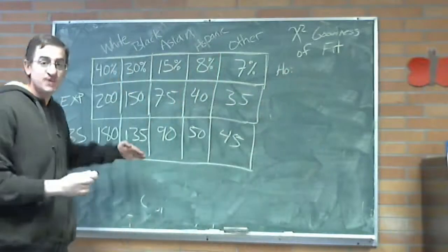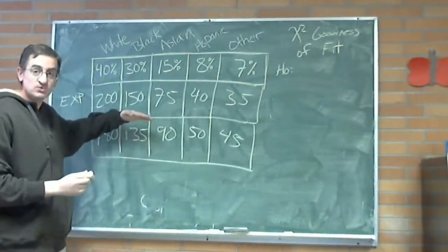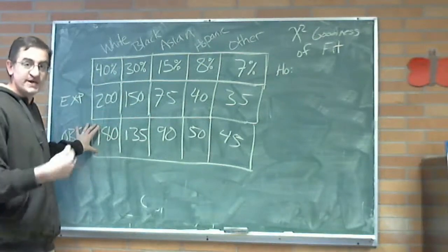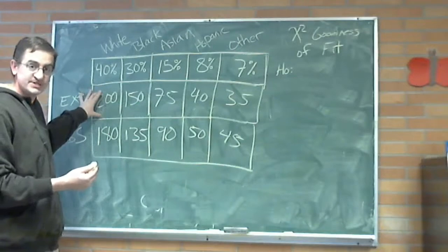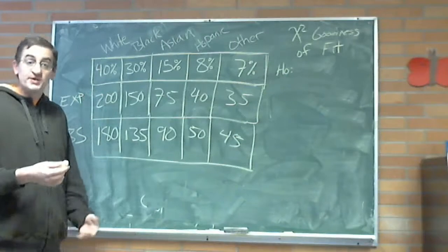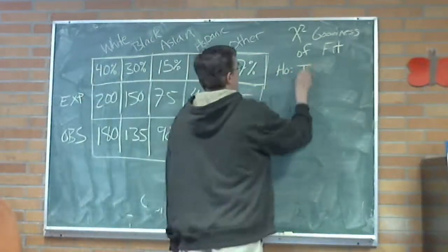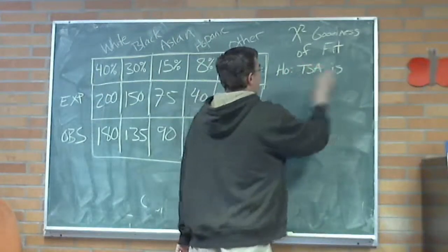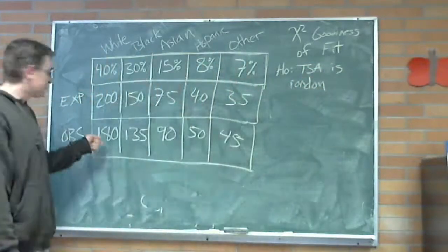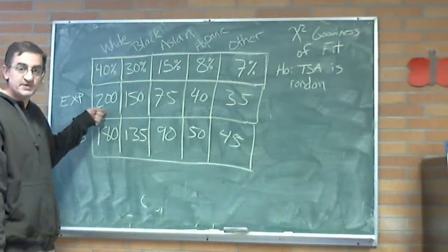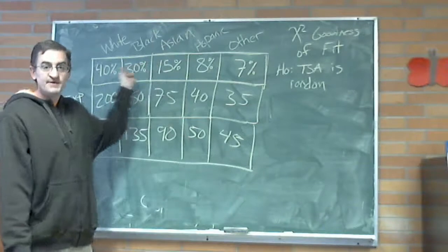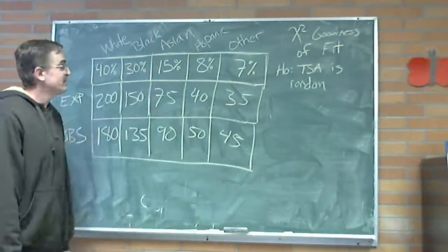So, this is the way it's going to work. Null hypothesis. Null hypothesis says what we expected and what we observed are close enough. What does that mean if what we expect for the random checks matches the percentages of the races going through the TSA security? That means the TSA really is random.